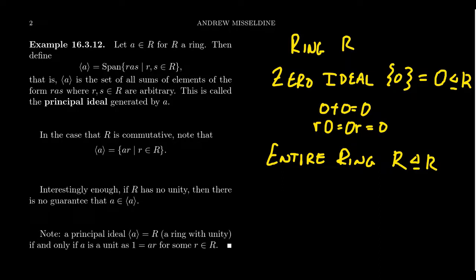We have these two guaranteed ideals, which is analogous to groups: the trivial subgroup is always normal, the whole group is always normal. Just as we studied simple groups — groups with no other normal subgroups besides the trivial one and the whole group — rings have this analogy with the smallest and largest possible ideals. The study of simple rings, rings with no non-trivial proper ideals, is actually a lot easier than simple groups because the distributive law forces many conditions.